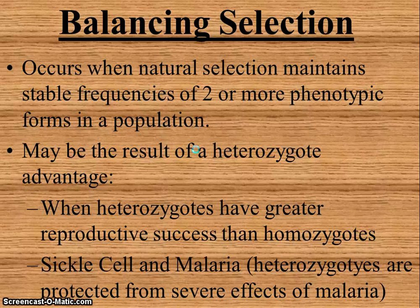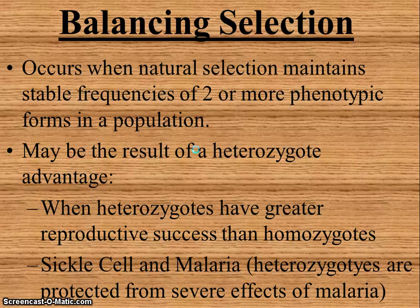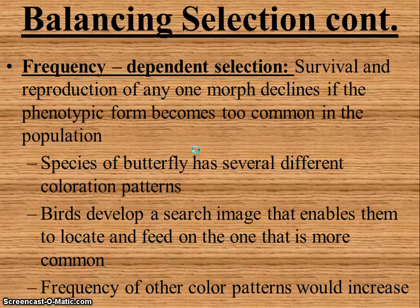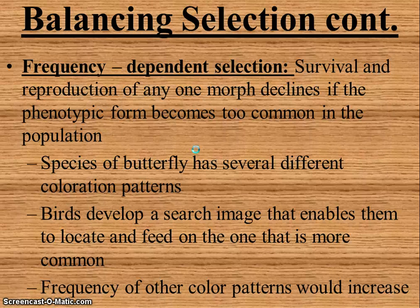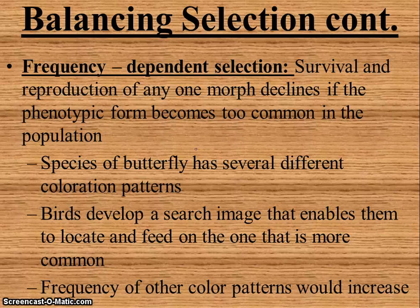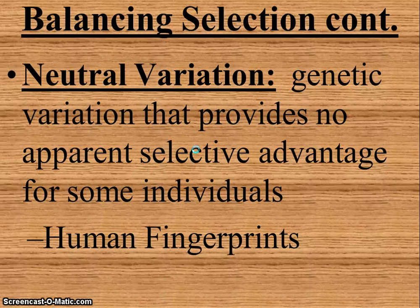Balancing selection occurs when natural selection maintains stable frequencies of two or more phenotypic forms in a population. It's the result of heterozygote advantage — when heterozygotes have greater reproductive success than homozygotes. We see this with sickle cell anemia and malaria: those who are heterozygotes for sickle cell anemia are actually protected from the severe effects of malaria. There is also frequency-dependent selection, where the survival and reproduction of any one morph declines if the phenotypic form becomes too common. Butterflies have this with their different coloration patterns — birds develop a search image to locate and feed on that species, so the frequency of other color patterns tends to increase.